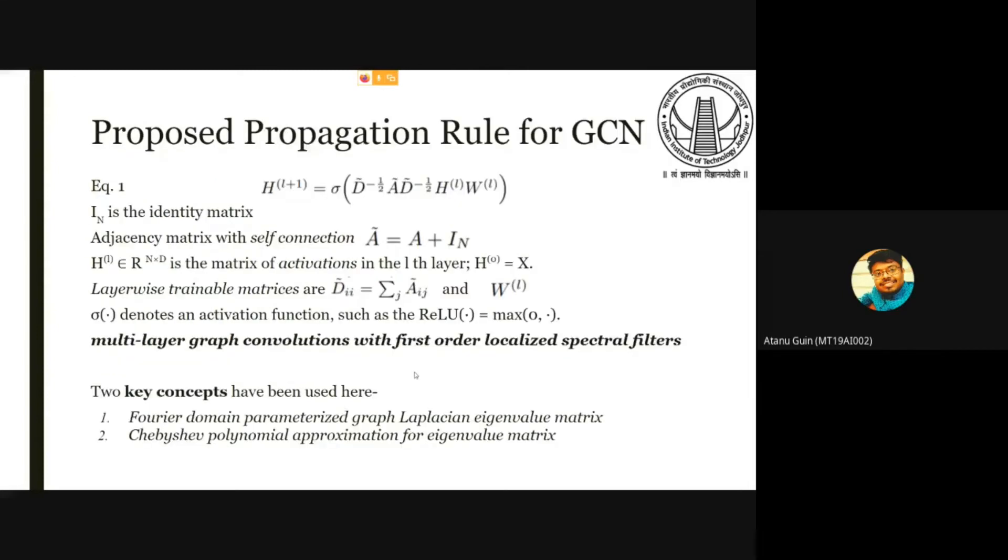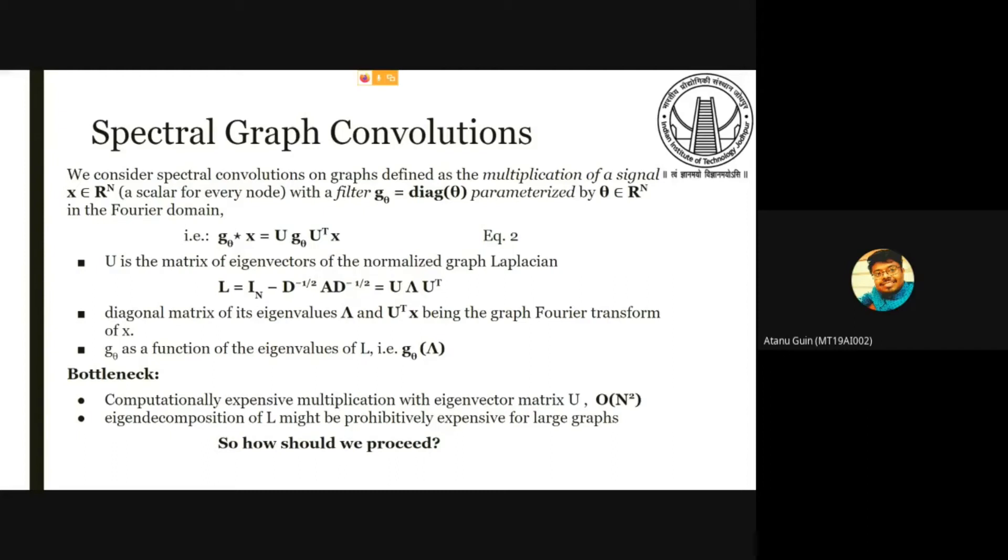Now the propagation rule is the graph Laplacian matrix along with the 0th layer hidden activation and trainable weight matrix. This is actually a multi-layer graph convolution with first-order localized spectral filters. Here we are using two key concepts. One is Fourier domain parameter using Laplacian eigenmatrix. And second one is we need to approximate the value of this filter. So we are using Chebyshev polynomial for the approximation.